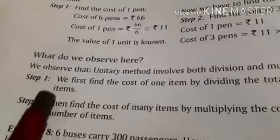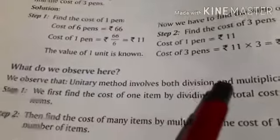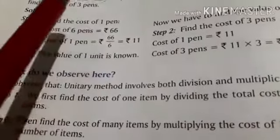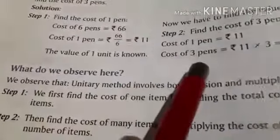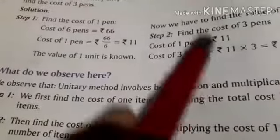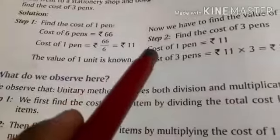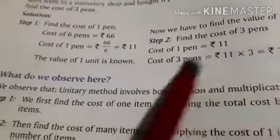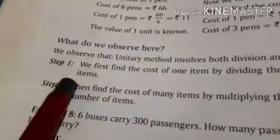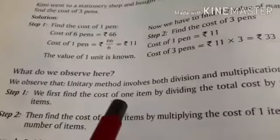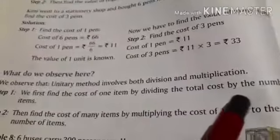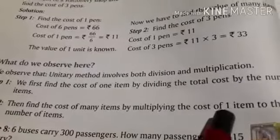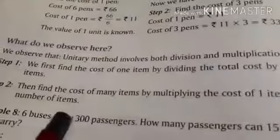So what we observe is that unitary method involves both division and multiplication. First we did division to find the cost of 1 pen, then we do multiplication to find the cost of the required number of pens. So to summarize: first find the cost of 1 item by dividing the total cost by the number of items, then find the cost of many items by multiplying the cost of 1 item by the required number of items.